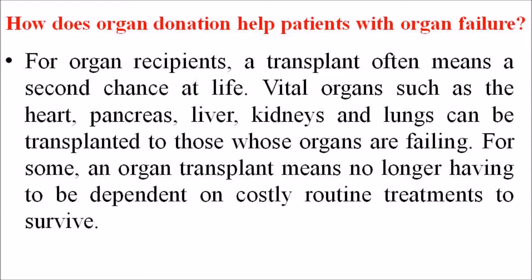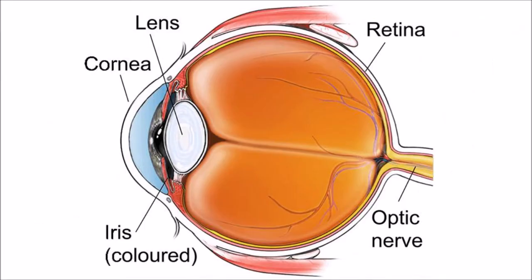Our next question is: how does organ donation help patients with organ failure? For the organ recipients, a transplant often means a second chance at life. Vital organs such as the heart, pancreas, liver, kidney, and lungs can be transplanted to those whose organs are failing. For some, an organ transplant means no longer having to be dependent on costly routine treatments to survive. It allows many recipients to return to a normal lifestyle. For instance, a cornea or tissue transplant means the ability to see again, or recovery of mobility and freedom from pain.